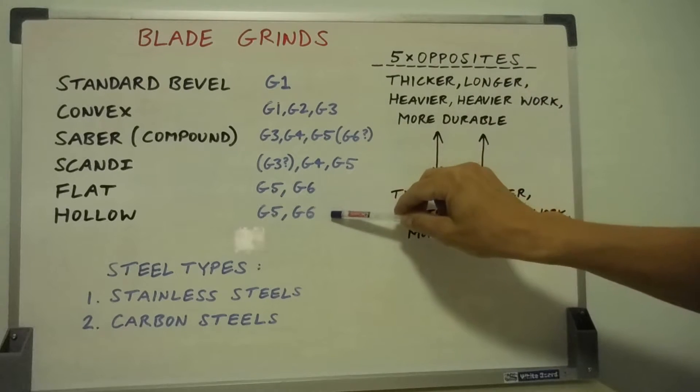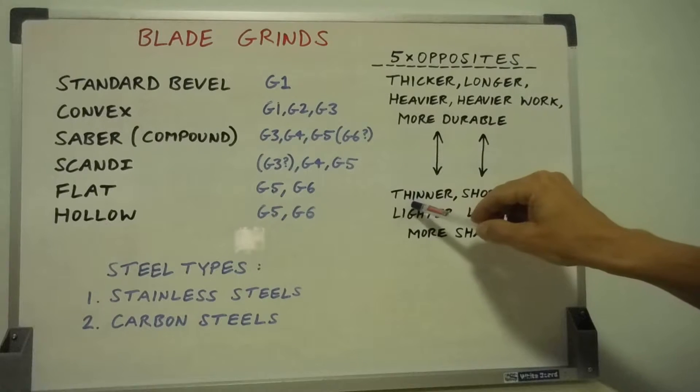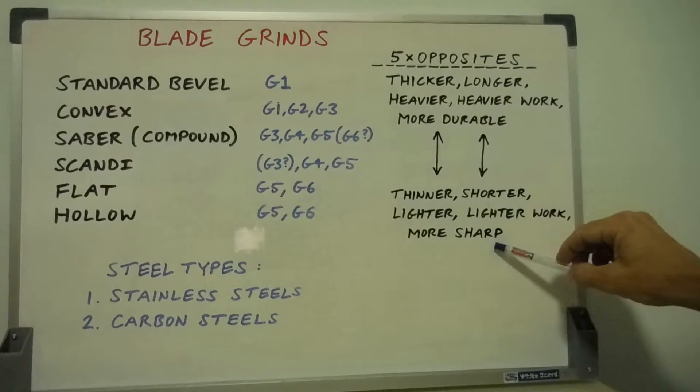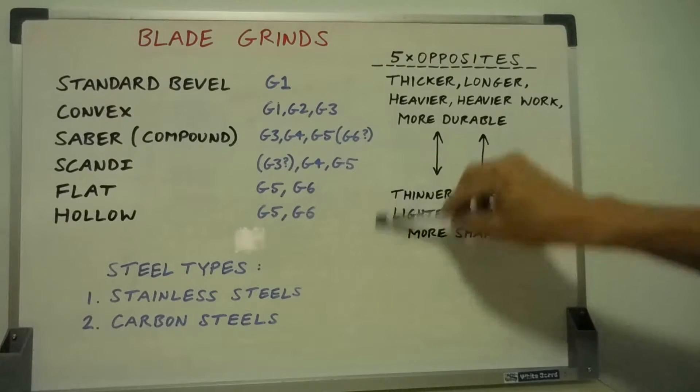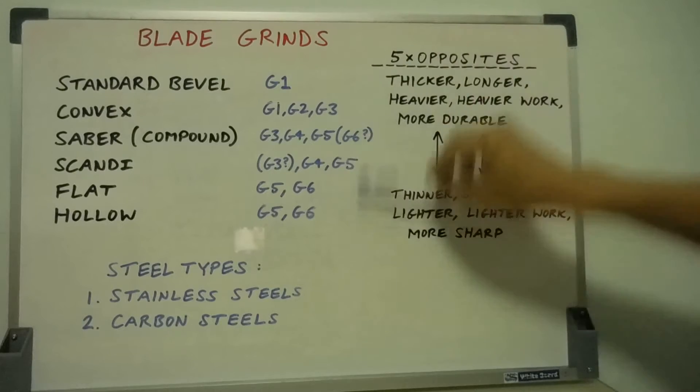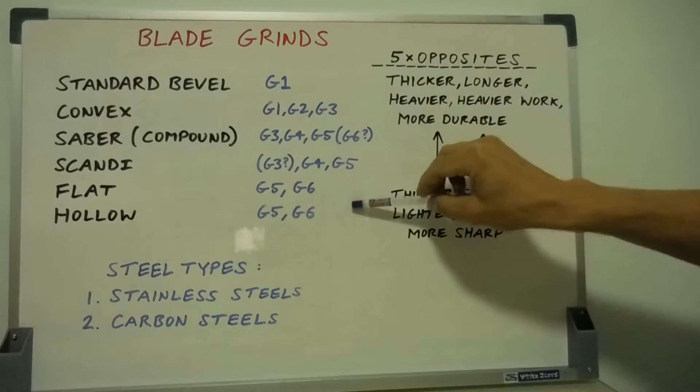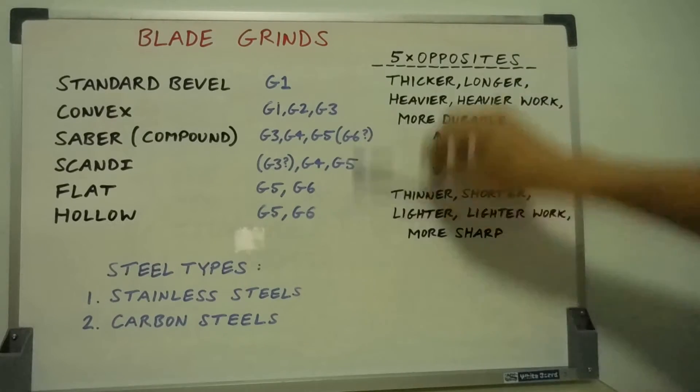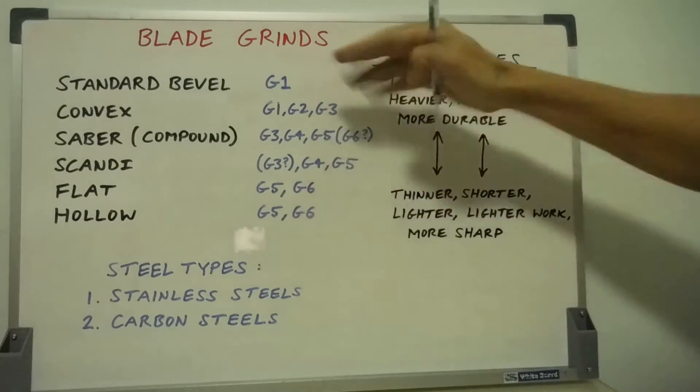Down to group six, which should be thinner, shorter, lighter, for lighter work, and more sharp edges, and perhaps less durable. So you can see those five opposites on both sides of the sliding scale. From group one to group six, you've got those five characteristics which should be opposites, and generally a scale up and down.